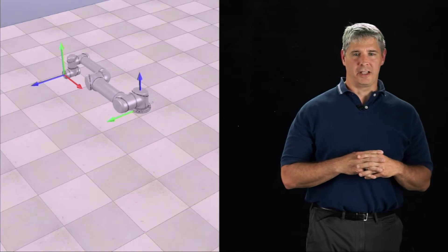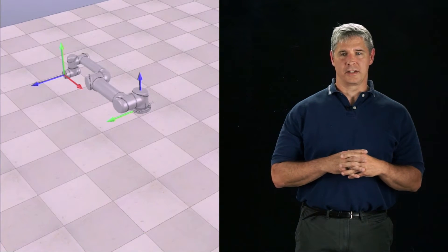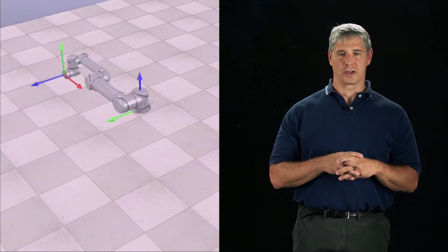Let's use the forward dynamics to simulate the motion of this 6R arm as it falls in gravity with zero joint torque supplied by the motors.